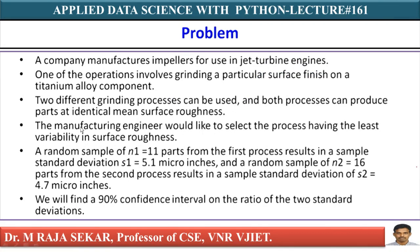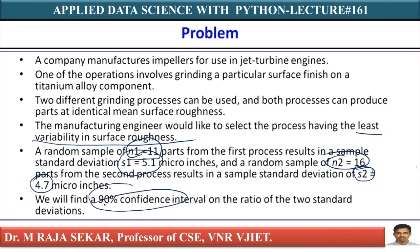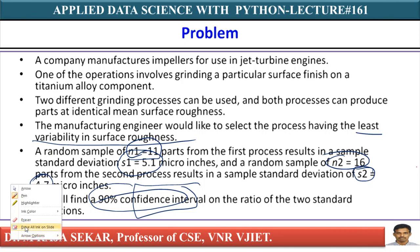A company manufactures impellers for use in jet turbine engines. One of the operations involves grinding a particular surface finish on a titanium alloy component. Two different grinding processes can be used, and both processes can produce parts at identical mean surface roughness. The manufacturing engineers would like to select the process having the least variability — we need the least variability in surface roughness. A random sample of N1 equal to 11 parts from the first process gives a sample standard deviation S1 equal to 5.1 micro inches, and a random sample of N2 equal to 16 gives S2 equal to 4.7 micro inches. We will find the 90% confidence interval on the ratio of the two standard deviations.